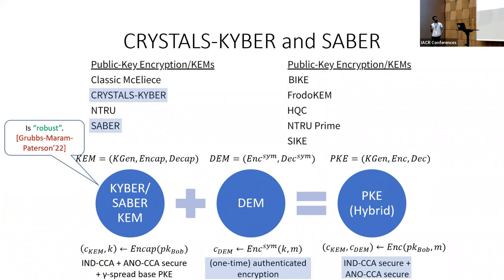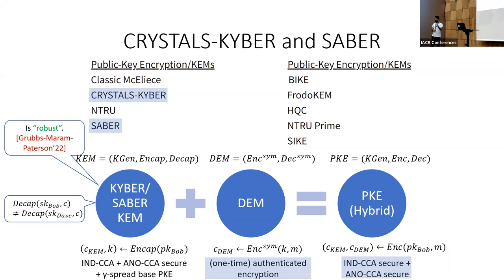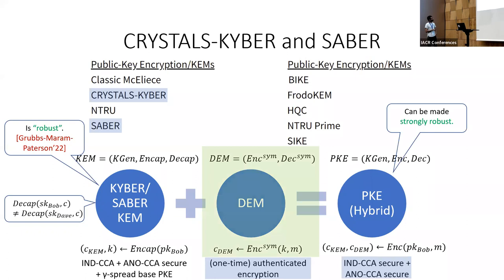On a somewhat brighter note, we were at least able to show that when it comes to robustness, the KEM of Kyber and Saber does satisfy some robustness — in quotes — because recall that implicit rejection KEMs cannot be robust by definition. But they do satisfy a weak property: it is hard to come up with a ciphertext such that if you decapsulate using two different secret keys, the output is the same. The outputs are valid but should not collide. We showed that this requirement is enough to ensure that if you choose your DEM appropriately, the final PKE scheme can be made strongly robust. So there is hope for achieving strong robustness in the PKE schemes of Kyber and Saber — in contrast to Classic McEliece, where no matter how strong you make your DEM, the PKE scheme cannot be made robust.